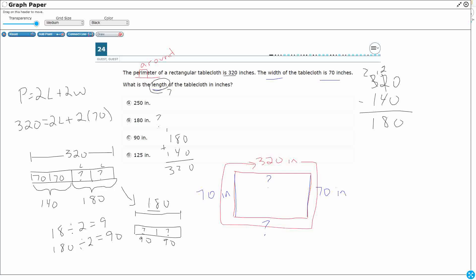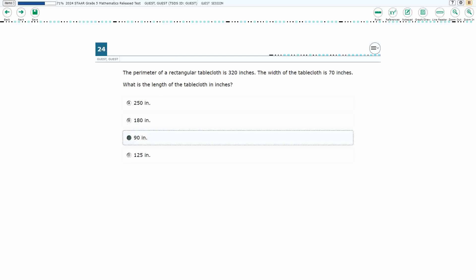Now how can I verify? Well, let's see if all four sides equal up. If I do 90, 90, 70, 70, what does that get me? Well, 9 and 9 is going to make 18. 7 and 7 is going to make 14. Yeah, that's that 32. So it is going to equal back up to that 320. So the length is not going to be that 180. It's going to be that 90 because that's half of the 180. So my answer is C.